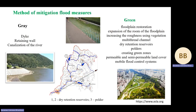As green measures, it is usual to propose floodplain restoration, expansion of the floodplain, increasing roughness using vegetation, using multi-thread channels, dry and wet retention reservoirs, and creating green zones to increase the time of rainwater runoff into the river. Other measures include vertical vegetation, green roofs, vegetation elements such as trees and tree lines, artificial wetlands, and permeable or semi-permeable grass and concrete land covers. Mobile flood control systems are not strictly green measures because they use artificial materials, but compared to grey measures, they are closer to green in terms of environmental influence.